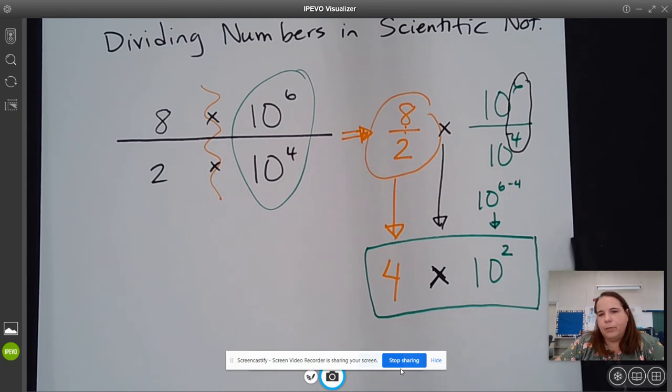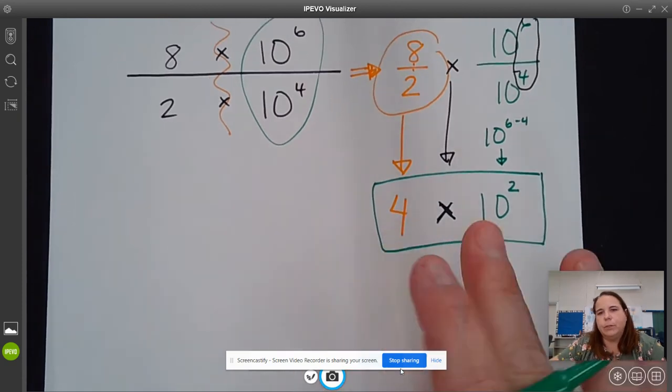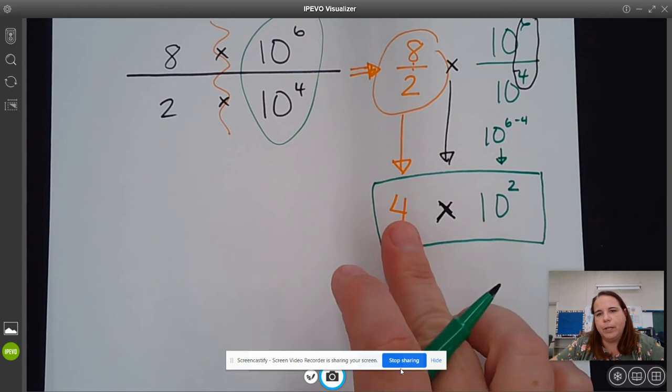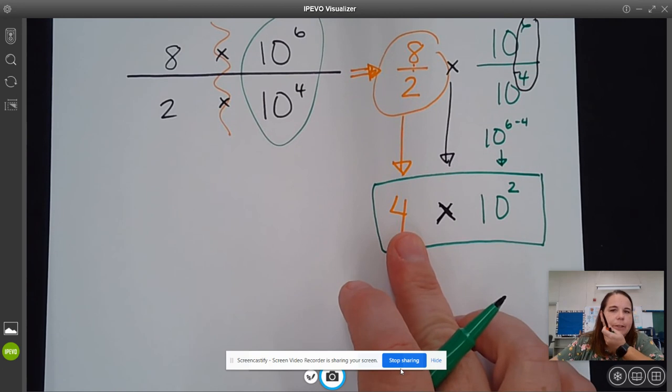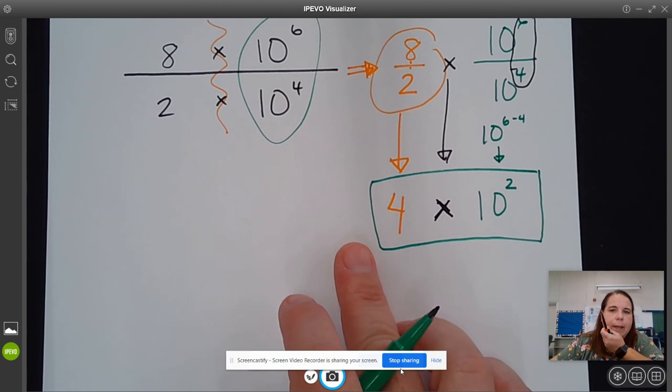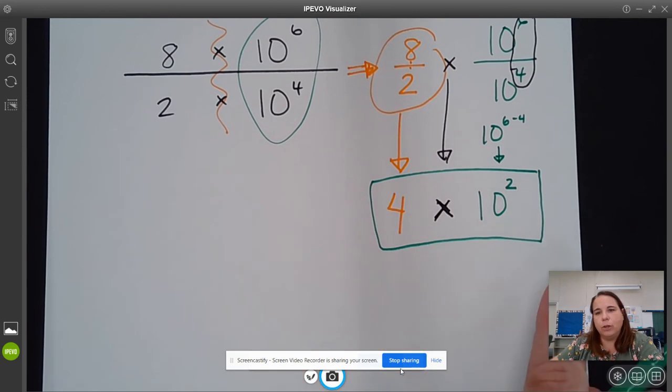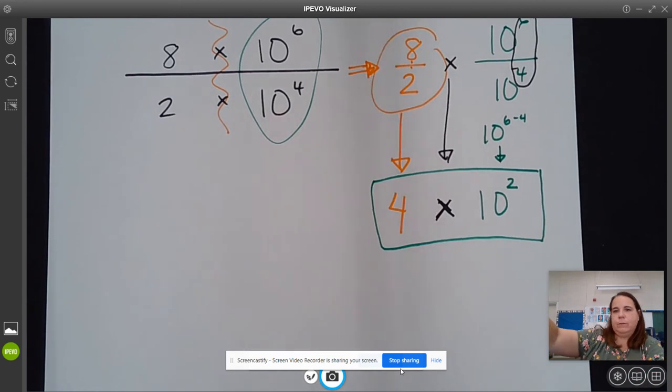So just like yesterday, sometimes what's going to happen is you're going to end up with a number that is not in scientific notation. So when that happens, we are going to have to adjust that number. So I'm going to show you an example of that next.